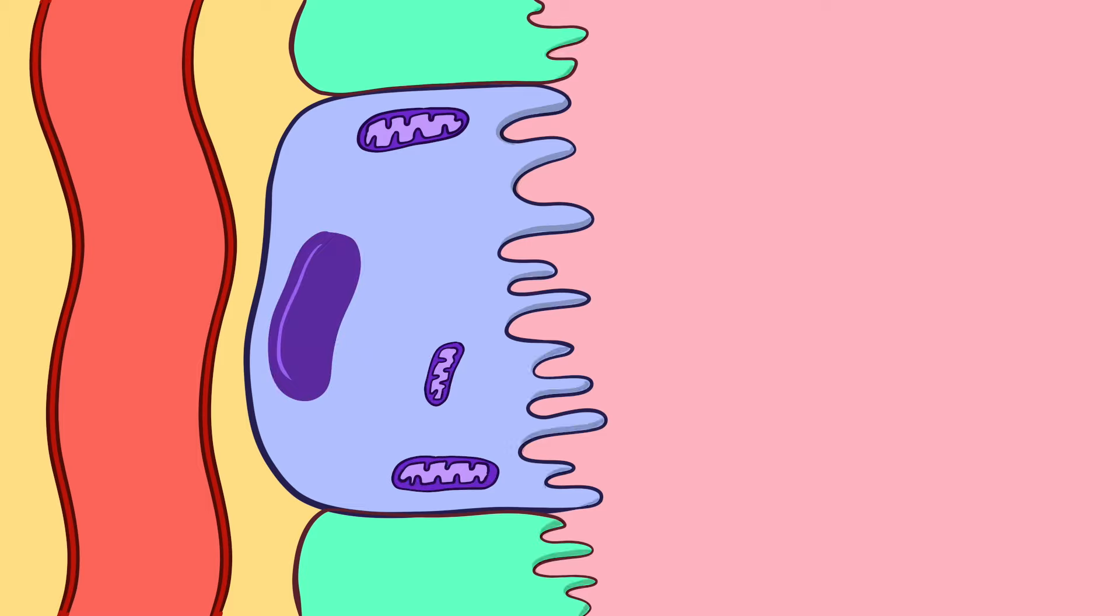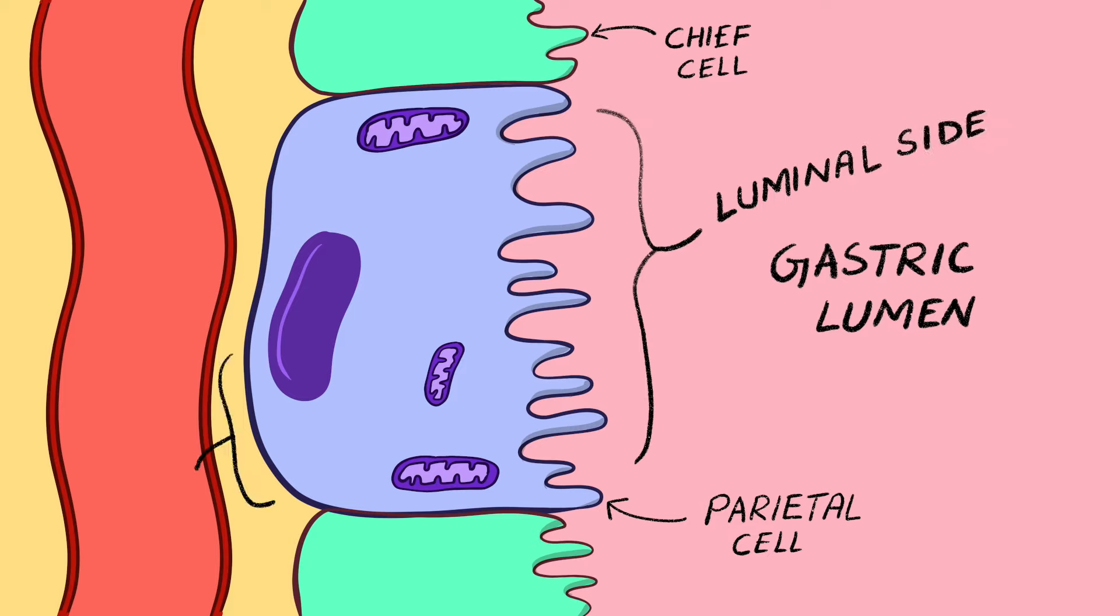Here I have drawn a parietal cell. There are other associated cells also like chief cells. These cells have two sides. The side towards the gastric lumen is called the luminal side and the opposite side is called the basolateral side. Here you can see the nearby blood vessels also.